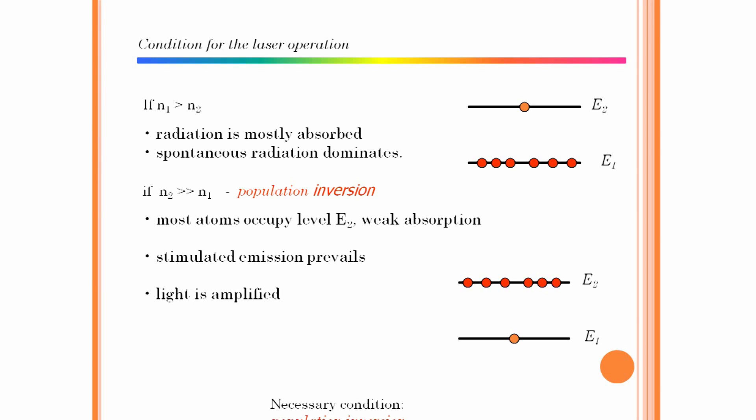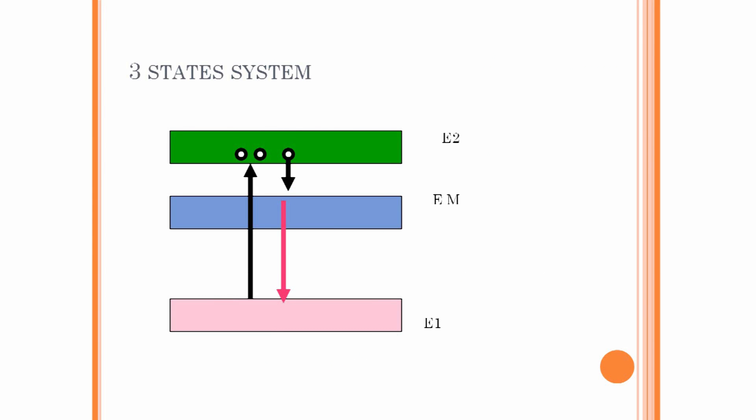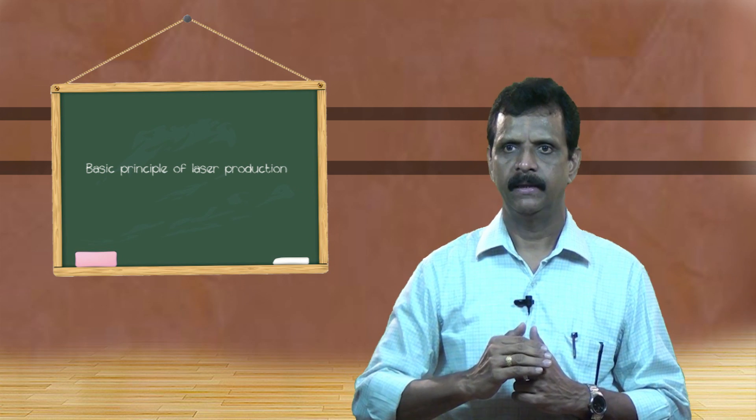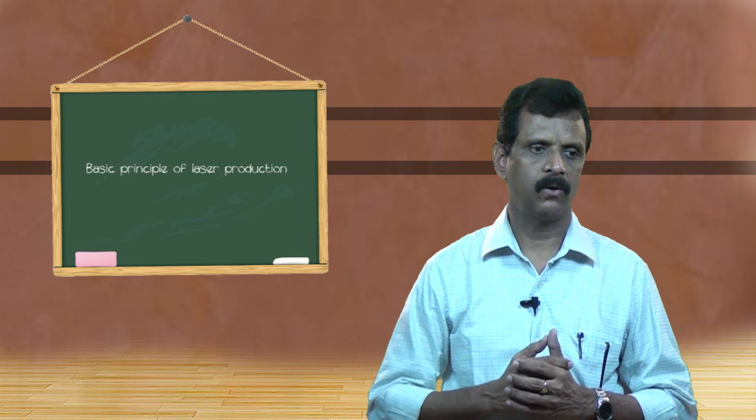The necessary condition for population inversion is n2 is greater than n1. Another important requirement for the production of laser is the metastable state. Even if you have more atoms in the excited state compared to the lower energy state, it will not serve the purpose because these atoms will come down to the lower energy state within a fraction of a second — 10 to the power of minus 8 seconds. But to have laser action, you need these atoms in the higher energy state for comparatively more time, and this is achieved by having an intermediate state.